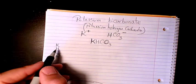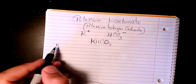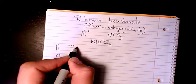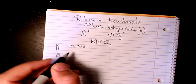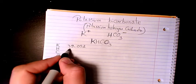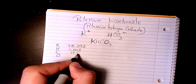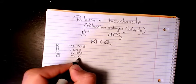And then I find the atomic mass of each of them from the periodic table. Potassium is 39.098, hydrogen is 1.008, carbon is 12.011, and oxygen is 15.999.